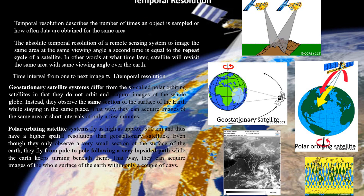Coming to satellite systems, in general we have basic and standard satellite systems like geostationary and polar orbiting. Geostationary satellites have high temporal resolutions compared to polar orbiting satellites, because geostationary satellites are fixed at one particular location in space at a height of around 36,000 kilometers away from the earth and spin with the equal speed of the earth.